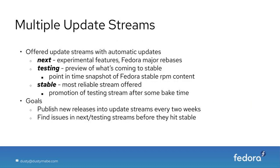We have three update streams which offer automatic updates. One is Next, focused more on experimental features or Fedora major release rebases. For example, when we switch to CGroups V2 — right now we're on CGroups V1 in Fedora CoreOS — we will land that in the Next stream first. It will have some soak time there, hopefully people report any issues, we get them fixed, and then eventually they'll go into Testing and Stable.